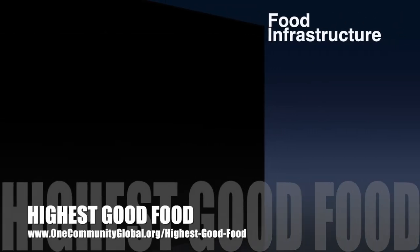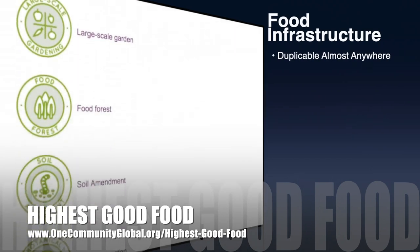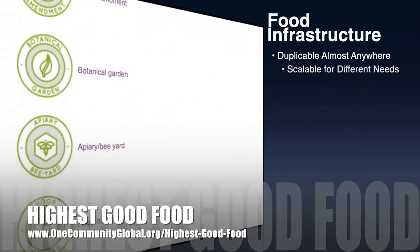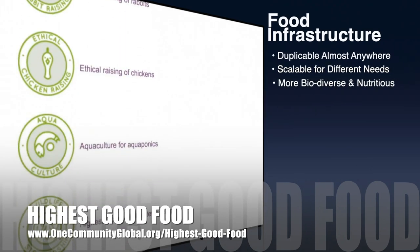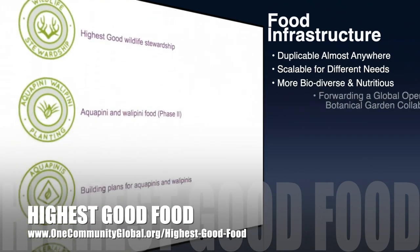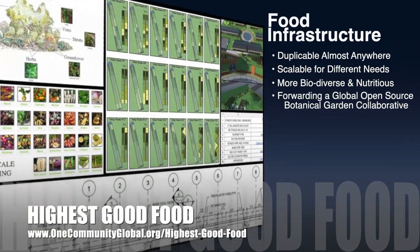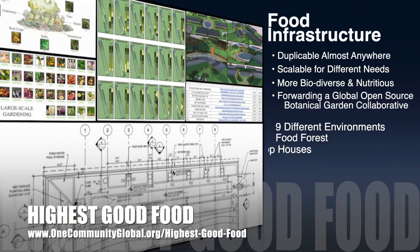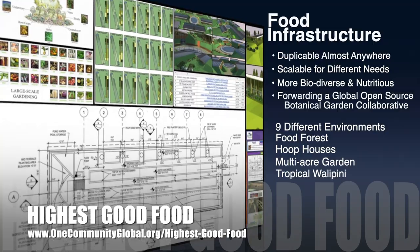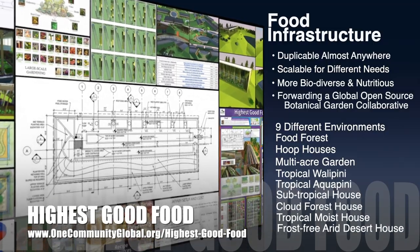One Community's approach to highest good food is duplicable almost anywhere, scalable for different needs, more biodiverse and nutritious, part of a global open source botanical garden collaborative, and includes nine different free shared and duplicable growing environments.